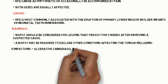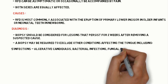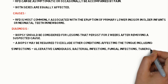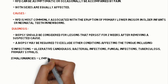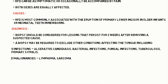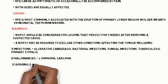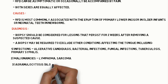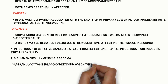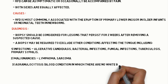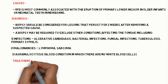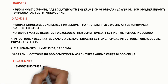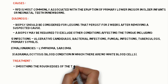These other conditions include: infections such as ulcerative candidiasis, bacterial infections, fungal infections, and tuberculosis ulcers; malignancies such as lymphoma and sarcoma; and agranulocytosis, a blood condition in which there are insufficient white blood cells, which leads to ulcer formation.